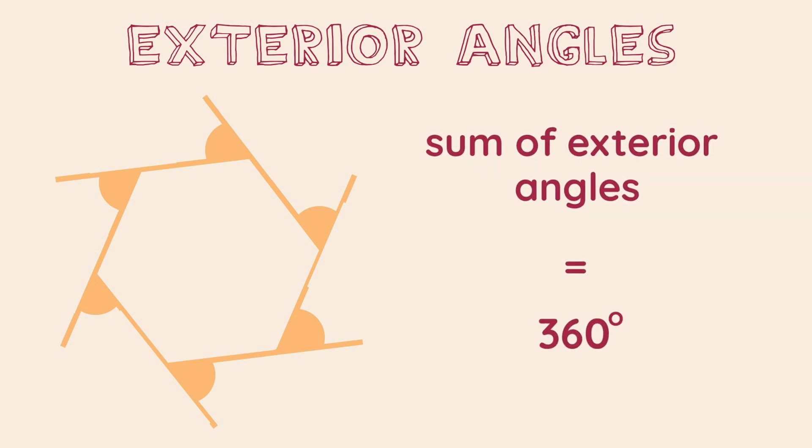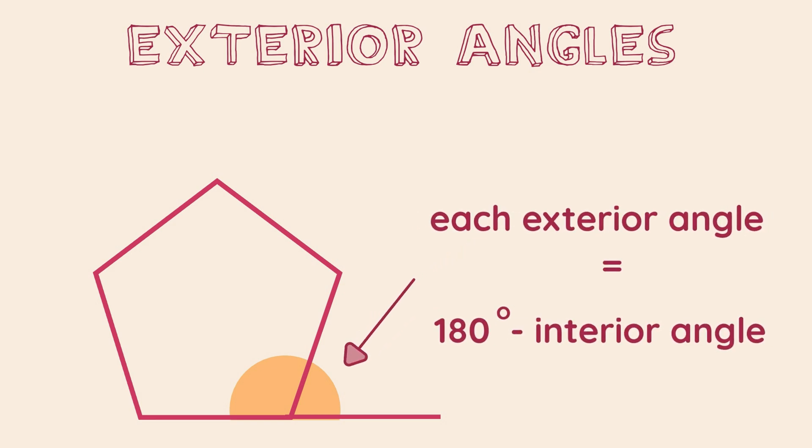Now let's look at exterior angles. The important point to remember is that the exterior angles of any polygon will always add up to 360 degrees. Additionally, if we know the interior angle, we can calculate the exterior by using the angles on a straight line fact. This is, that angles on a straight line will always add up to 180 degrees. Therefore, we can take the interior angle away from 180 to find the value of the exterior angle.